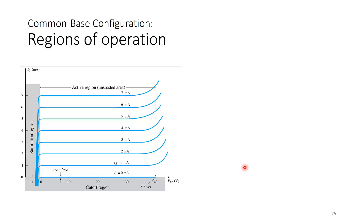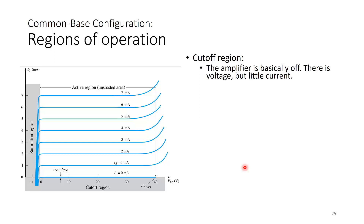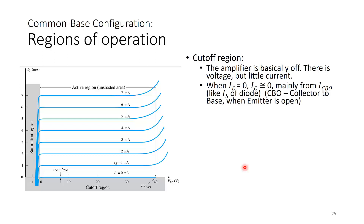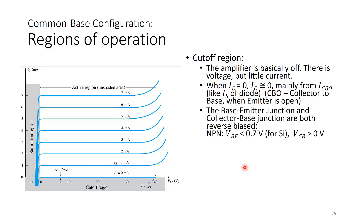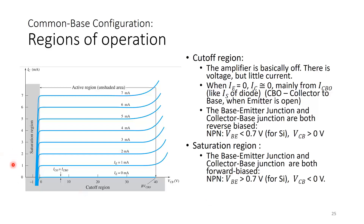Regions of operation: in the cutoff region, the amplifier is essentially off — there is voltage but little current, and when IE = 0, IC ≈ 0, mainly from ICBO (collector-to-base leakage current with emitter open), similar to reverse saturation current in a diode. In the saturation region, both the base-emitter and base-collector junctions are forward biased, with VBE > 0.7V and VCB < 0V, with an exponential IC rise as VCB increases toward zero before entering the active region.